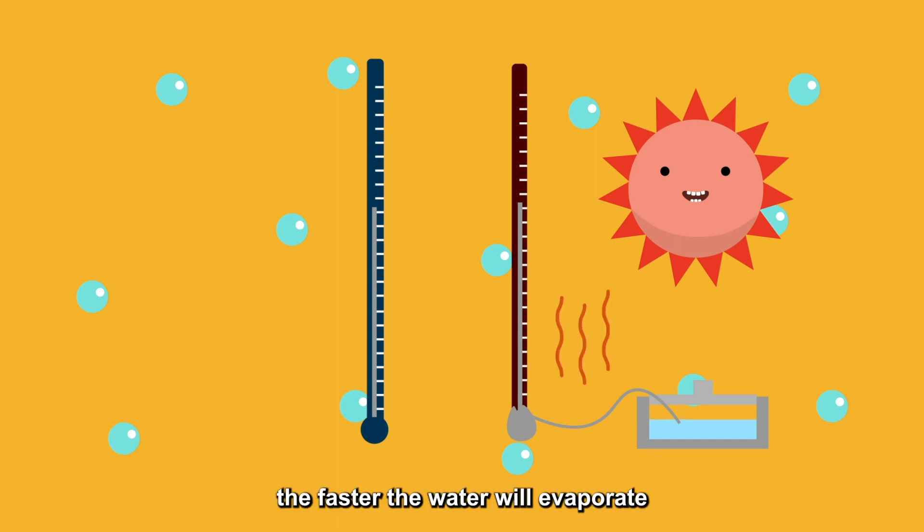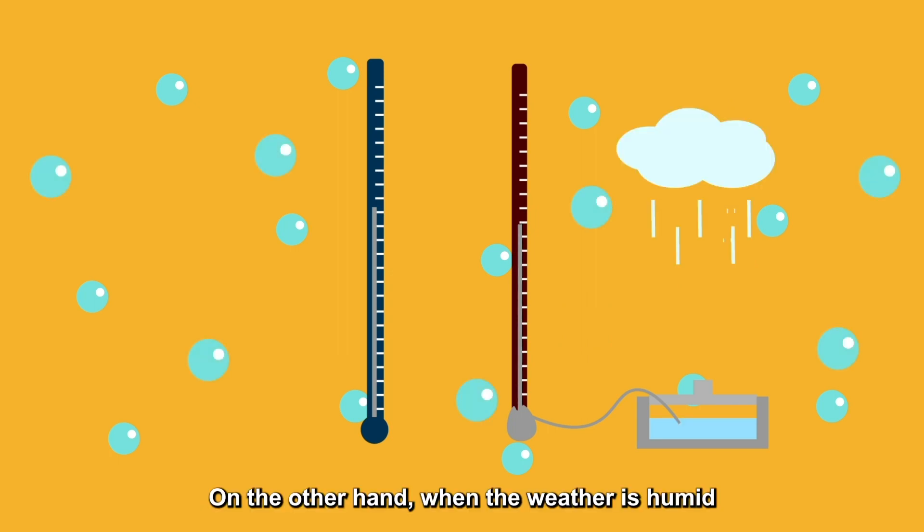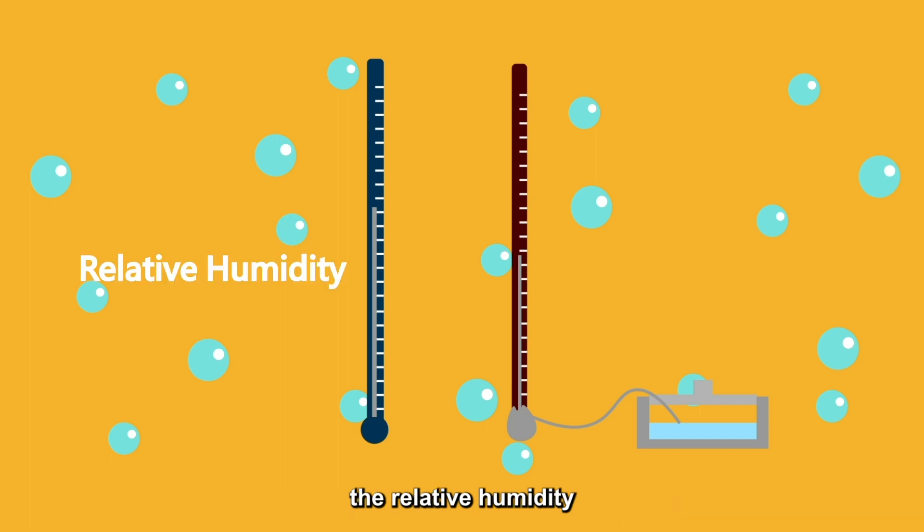The drier the weather, the faster the water will evaporate and the lower the wet bulb temperature reading. On the other hand, when the weather is humid, it'll be harder for water to evaporate and the wet bulb temperature will be higher. Based on the dry bulb and wet bulb temperatures, the relative humidity and dew point temperature can be calculated.